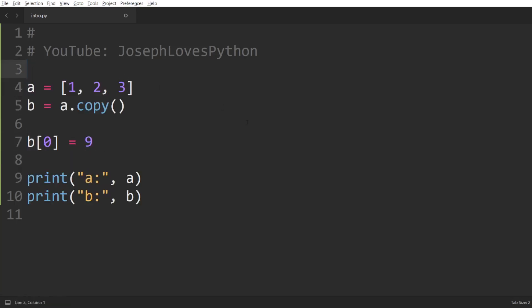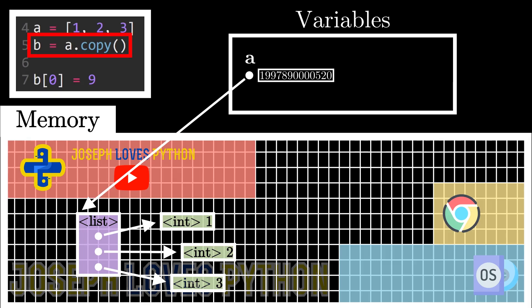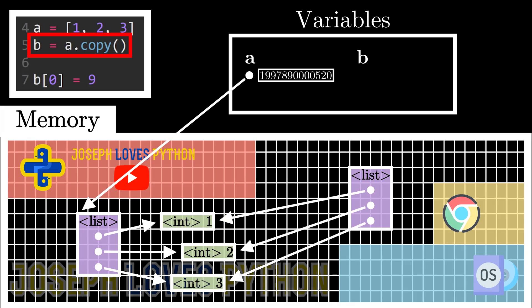Let's look at the memory and understand what this actually does. The copy method tells Python that we don't want B to simply point to the same object A is pointing to — we actually want B to point to a copy of that object. Since A points to a list containing three pointers, Python creates a copy of this list in memory, meaning copies of its pointers, which still point to the same underlying objects. We won't copy the actual integer objects, only the list object itself. Finally, B stores the address of this newly created object.